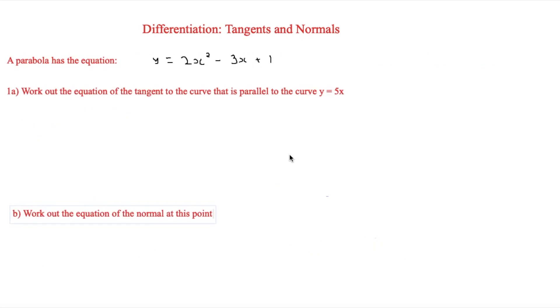So this next question here has slightly more context. And you have to think about it a little bit more as it doesn't just give you the point where the tangent is at. And the equation of the parabola here is y equals 2x squared minus 3x plus 1.